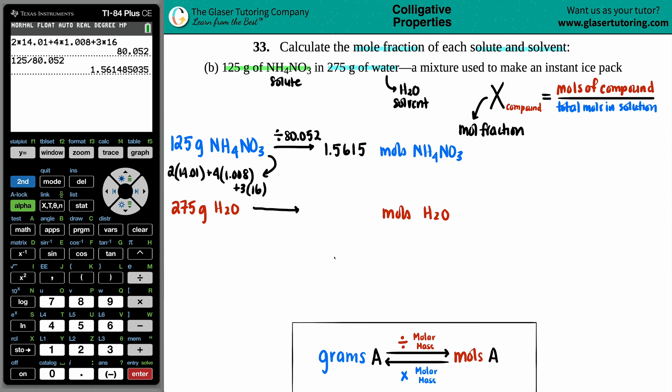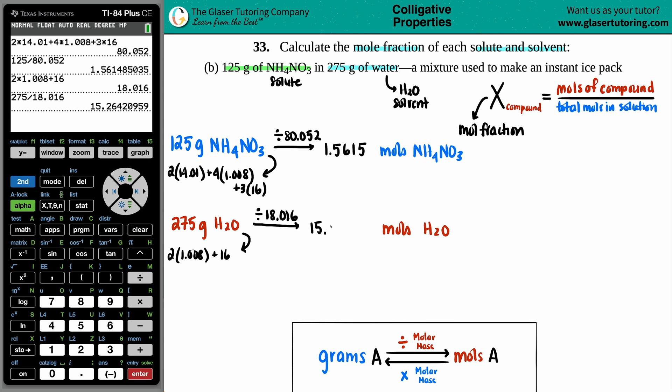Try not to round as much as you can, because this is not the final answer. We have to do the same for the water. So I have two hydrogens. Each hydrogen on my periodic table is 1.008 plus one oxygen, which is 16. So two times 1.008 plus 16. I get an 18. Divide by 18.016. So 275 divided by that number. We get 15.2642. Sure.